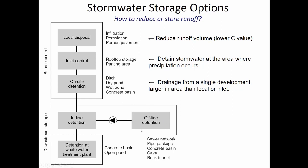Offline detention — an example is that Japanese case where they've excavated enormous underground vaults and use something like a jet engine to move water from place to place. The worst option from a desirability and economic standpoint is to store water at a treatment plant. It's better than allowing rainwater to wash through unregulated, but it's very expensive, engineering costs are high, and the consequences of failure are more severe.